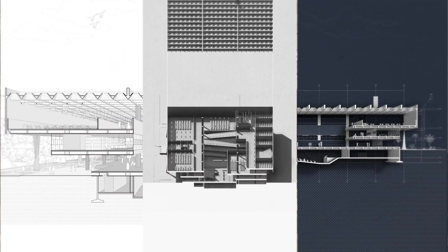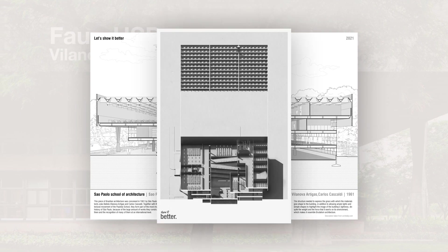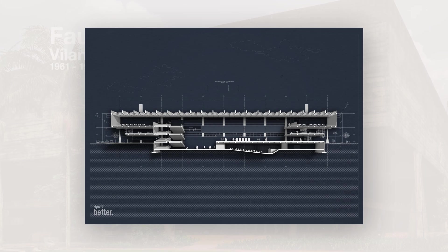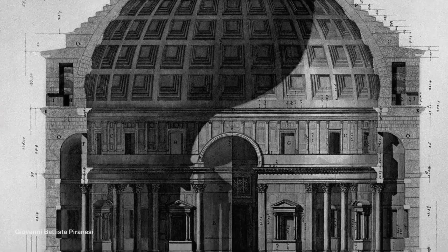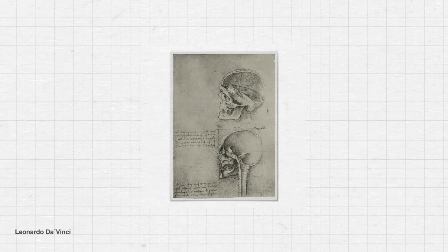In this course, you will be able to learn how to create three different types of sections: a perspective line section, an artistic isometric section, and a blueprint maquette section. You will also get some valuable insight into understanding the section and a bit of its history.